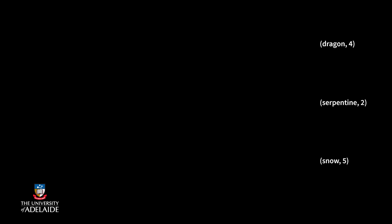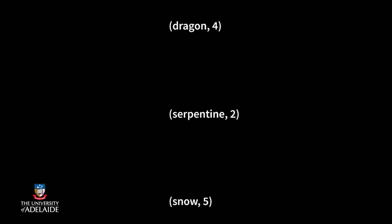When all the reduce workers finish their job, I gather the final produced key-value pairs. These pairs are what I was looking for — each word and the number of its occurrences in the books.